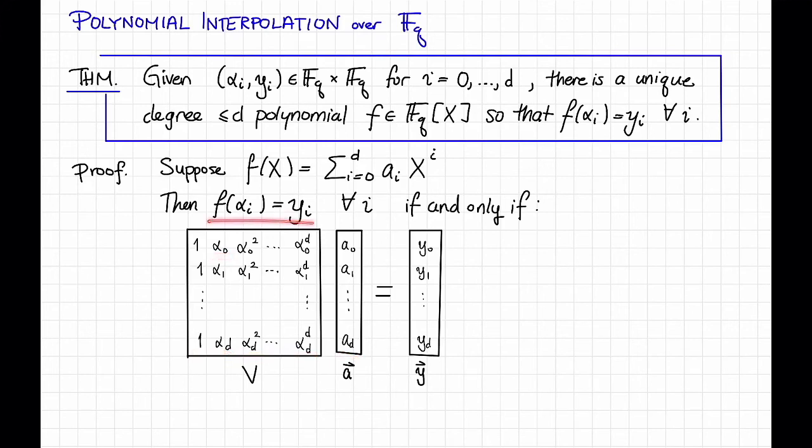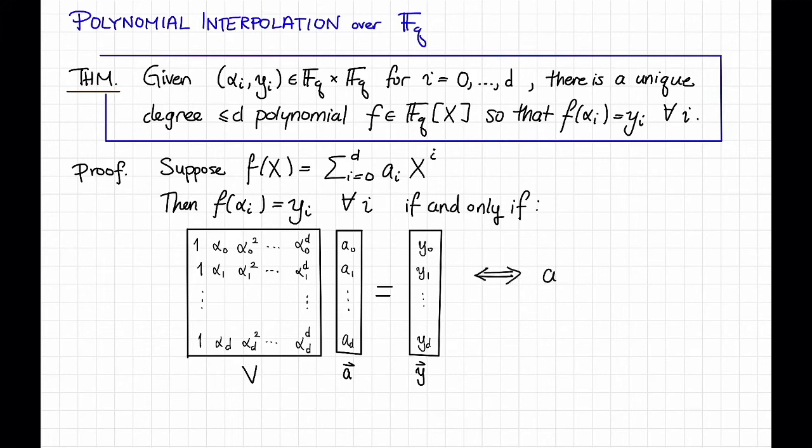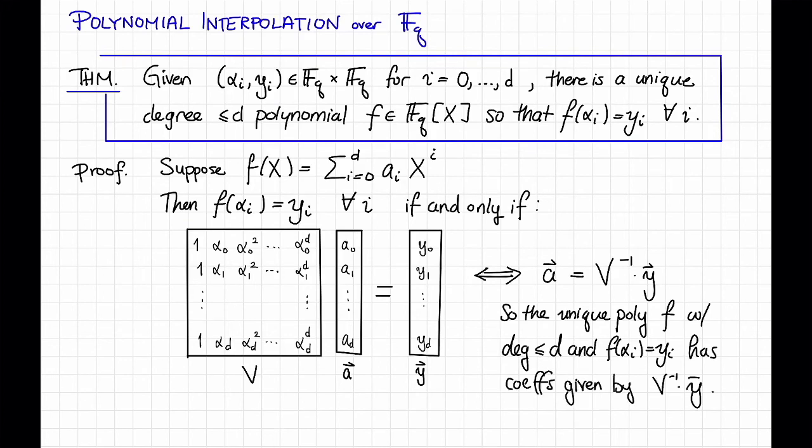Here, we have a vector A whose entries are the coefficients of the polynomial. And just like we saw on an earlier slide, when we multiply V by A, this is basically the same as just evaluating the polynomial F at all of these evaluation points, alpha_0 through alpha_d. And so what it means for F(alpha_i) to be equal to y_i is that this matrix vector product is equal to the vector y, whose components are just y_0 up through y_d. But because square Vandermonde matrices are invertible like we just saw, this linear equation holds if and only if the vector A equals V^{-1} * y. So that means that the unique polynomial F that interpolates these points has coefficients given by V^{-1} * y. And that proves the theorem.